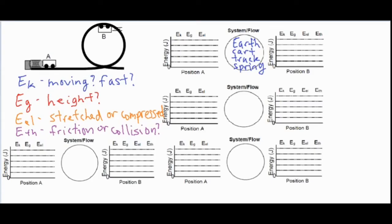In a case where we're including every single thing in our system, we should have the same amount of energy at position A as we do at position B, because of conservation of energy. In the very beginning, the only answer that is 'yes' is something stretched or compressed — which is the spring — so we give it five blocks of energy: one, two, three, four, five. So in the end we'll also have five blocks total.